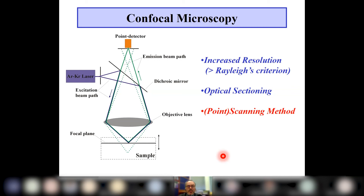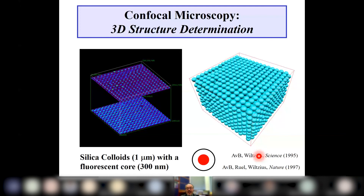By moving the sample or scanning the dichroic mirror, you build up 2D images, and by moving the focal plane you get three-dimensional data. Because colloids form equilibrium phases, combining confocal microscopy with fluorescent particles — for instance with a fluorescent core and a non-fluorescent shell — gives you particle coordinates in 3D and allows analysis of structures at the single particle level.